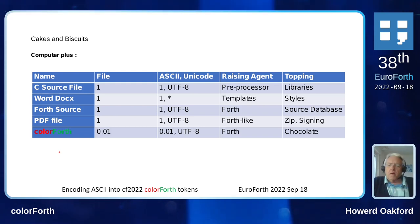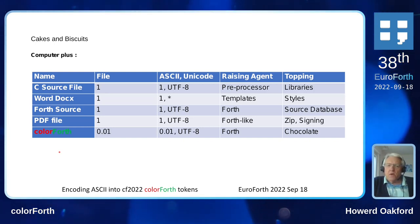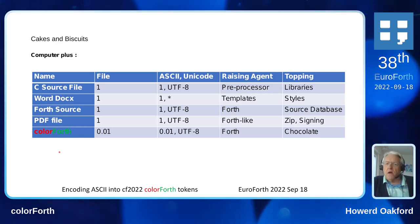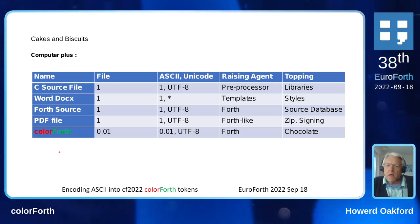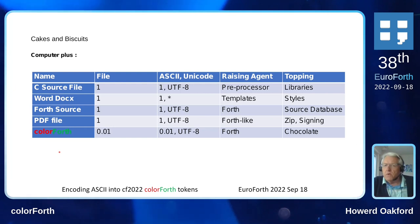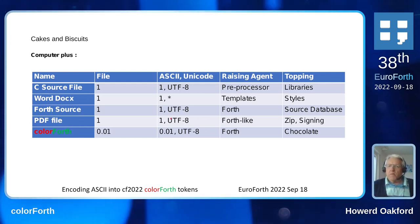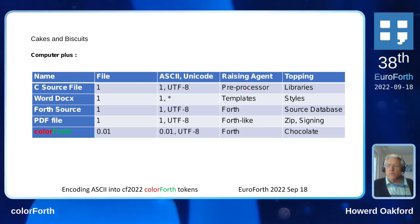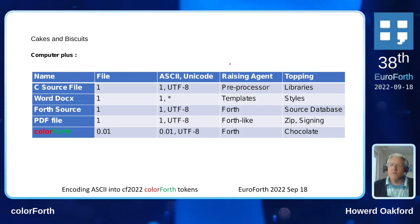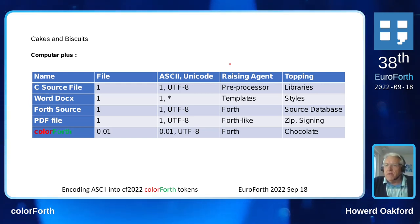When it comes to computer language design, you've got the same kind of choices of what you mix in. Are you going to use files in your system? Are you going to use ASCII, Unicode? If it's a C source file, the answer is yes — it's a file, and you can use ASCII, UTF-8. The raising agent that makes this thing into something useful is the C preprocessor, and the icing on top of the cake is the C libraries.